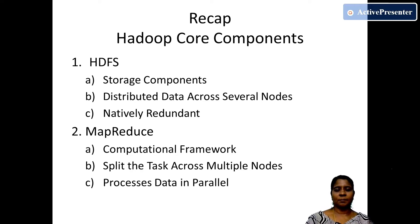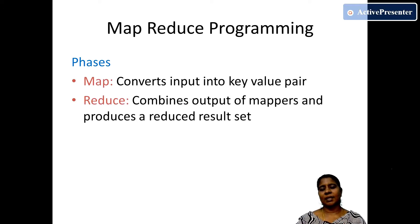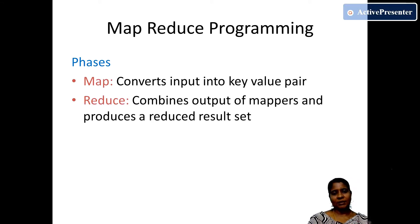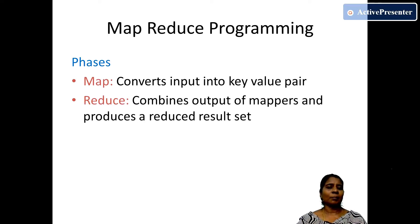The MapReduce program contains two important tasks: the map task and the reduce task. The main function of the map task is to convert the input into key-value pairs. The reduce task combines and summarizes the output from the mapper, and that reduced result is given to the client. Now, with a small card game, we'll see a demonstration of how MapReduce works.